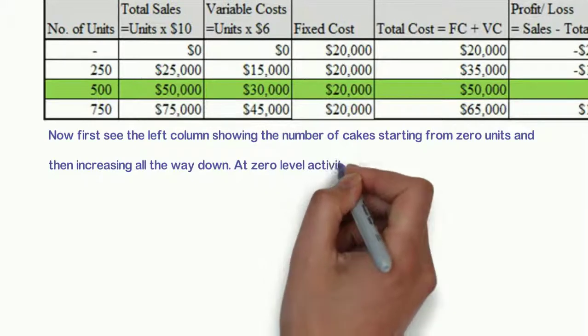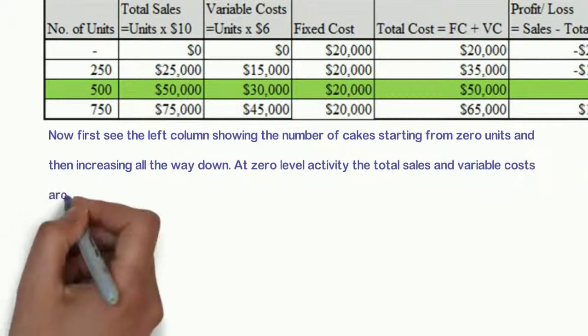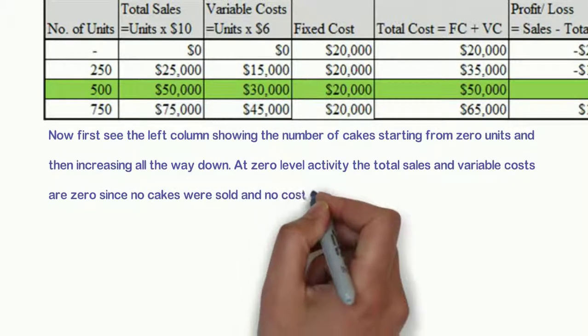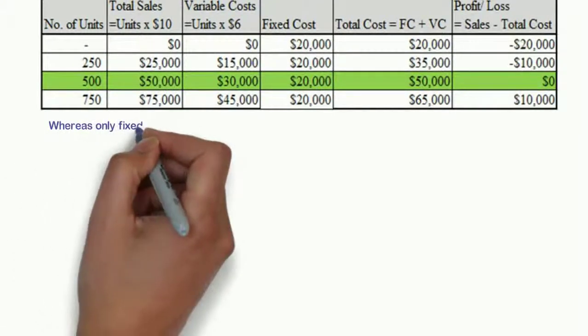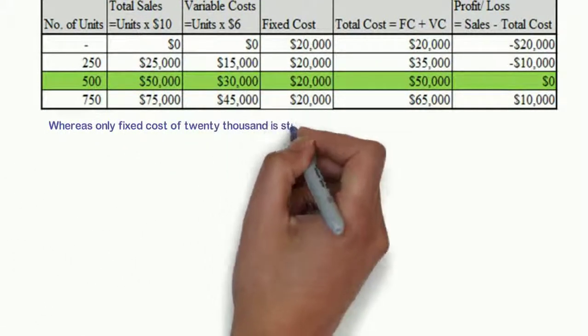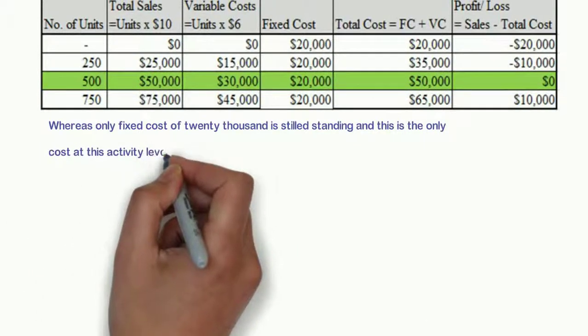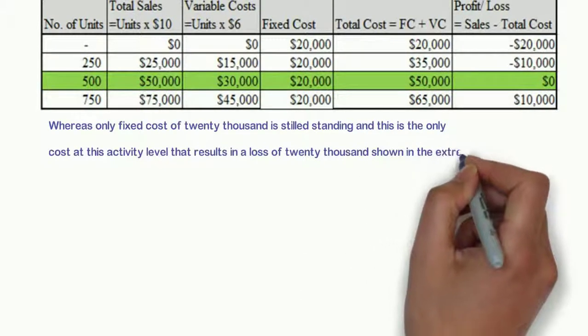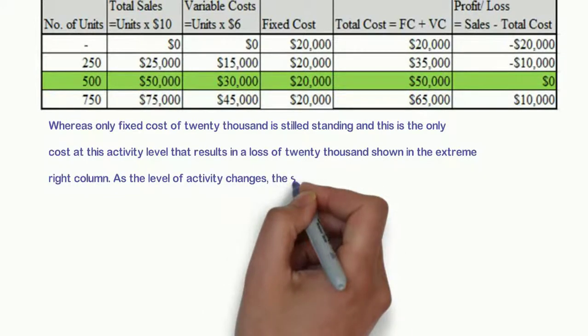At 0 level activity, the total sales and variable costs are 0 since no cakes were sold and no cost to produce a cake was incurred. Whereas only fixed cost of $20,000 is still standing, and this is the only cost at this activity level that results in a loss of $20,000 shown in the extreme right column.